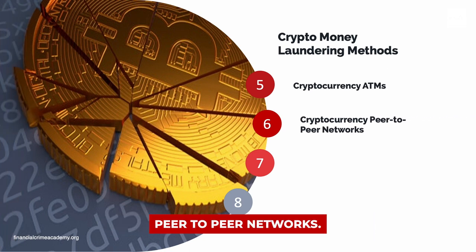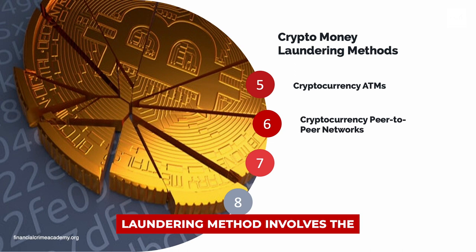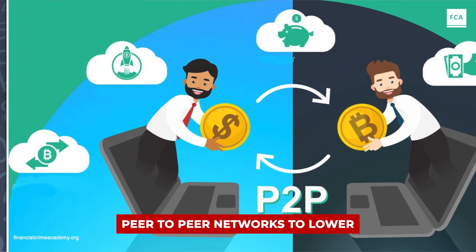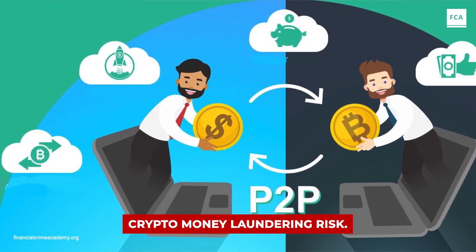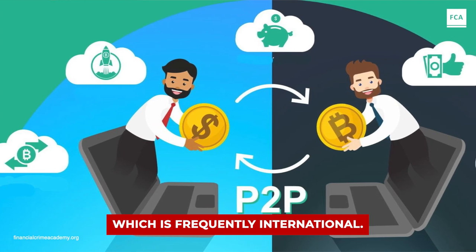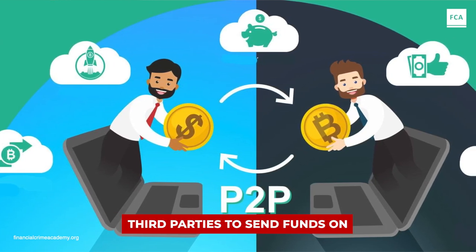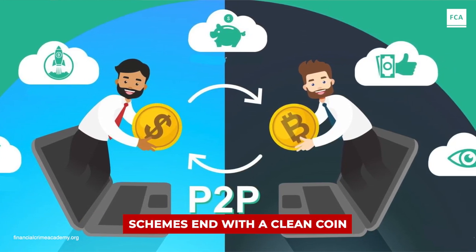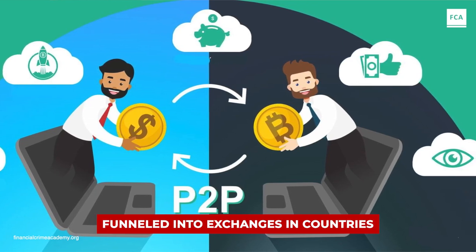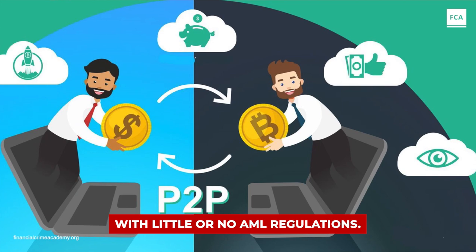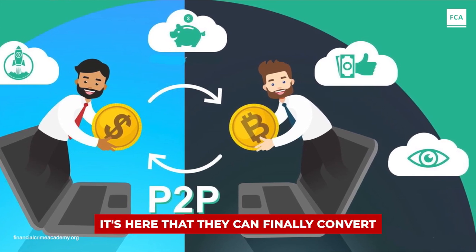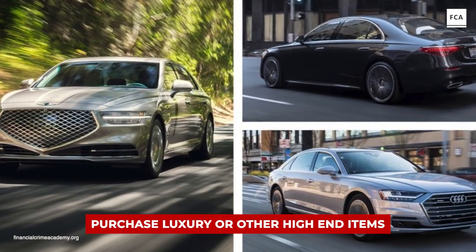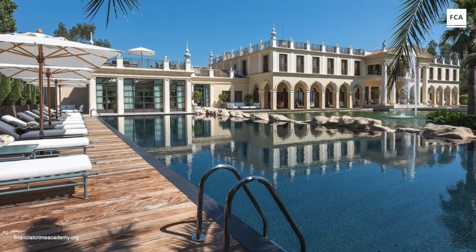Method 6: Cryptocurrency Peer-to-Peer Networks. The sixth cryptocurrency money laundering method involves so-called peer-to-peer networks. Many criminals turn to decentralized peer-to-peer networks to lower crypto money laundering risk, which is frequently international. Here, they can often use unsuspecting third parties to send funds on their way to the next destination. Most cryptocurrency money laundering schemes end with a clean coin funneled into exchanges in countries with little or no AML regulations, where they can finally convert it into local currency and use it to purchase luxury items such as sports cars or upscale homes.